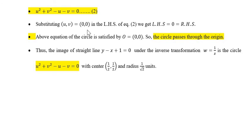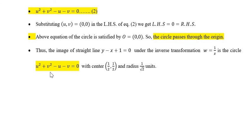Substituting uv equal to 0 in the LHS of the circle equation, we get LHS equal to 0, which equals the RHS. Thus the circle equation is satisfied by the origin, so the circle passes through the origin. Thus the image of the straight line y minus x plus 1 equal to 0 under the inverse transformation w equal to 1 upon z is the circle u square plus v square minus u minus v equal to 0, with center 1 upon 2, 1 upon 2 and radius 1 upon root 2 units.